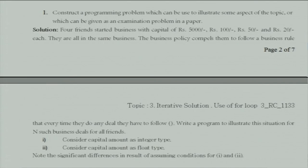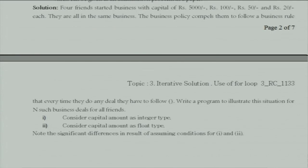We designed a story: four friends started business with capital amounts of 5000, 1050, and 20 rupees each, all in the same business. The business policy compels them to follow a rule — every time they do a deal, the new capital equals the old capital plus square root of their capital. Write a program to illustrate this situation for n such business deals, considering capital as integer and as float.